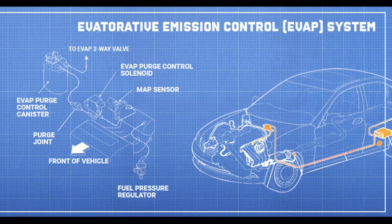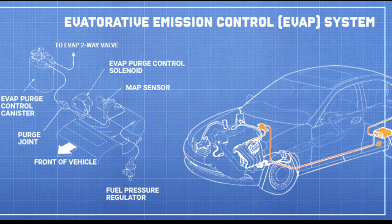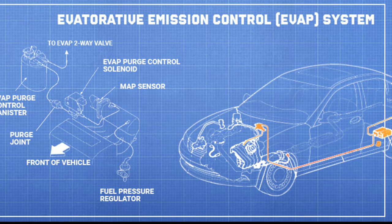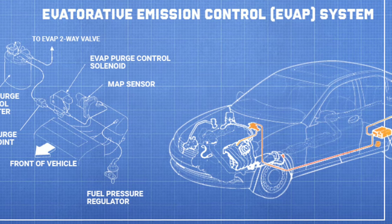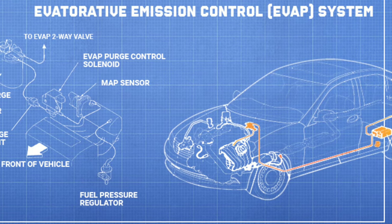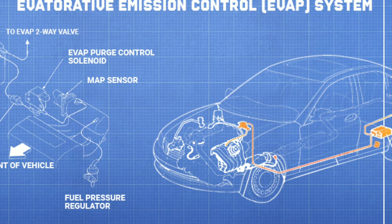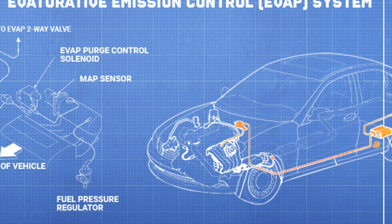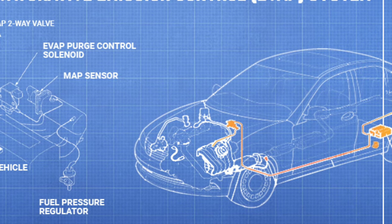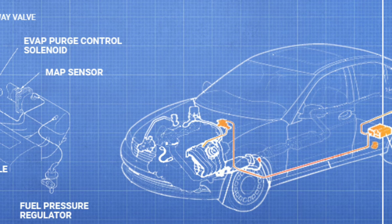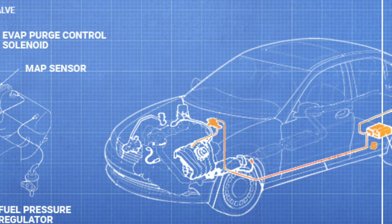The EVAP system also helps the engine run as well as possible. If fuel vapors are wrongly caught and stored, the ratio of air to fuel can be messed up, making the engine hard to start, resulting in bad gas mileage, and reduced power. By controlling the fuel vapors, the EVAP system ensures the engine runs efficiently.